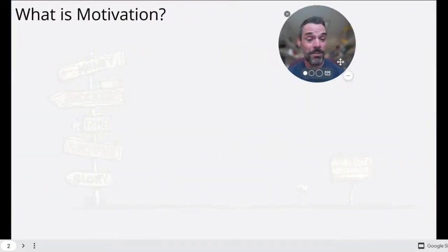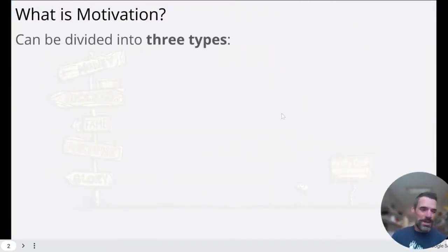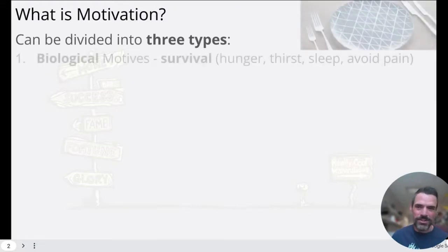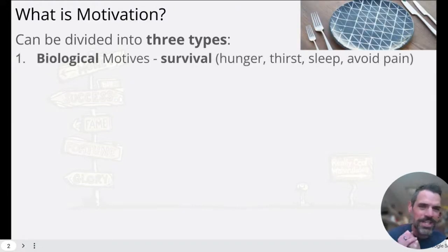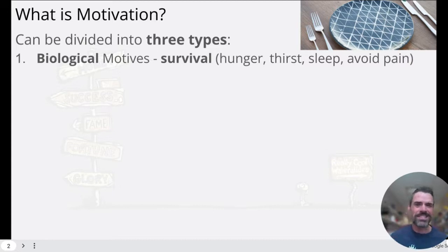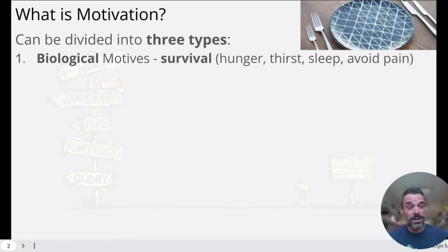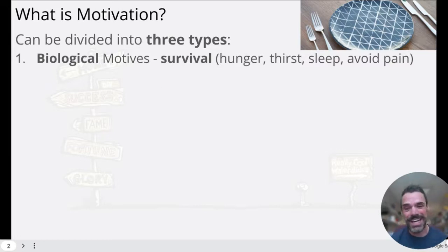What is motivation? Three big types. The first type we're going to talk about is biological motives. These are innate things, things that we have for survival: hunger, thirst, avoiding pain — drives that we have to keep us alive in this world.